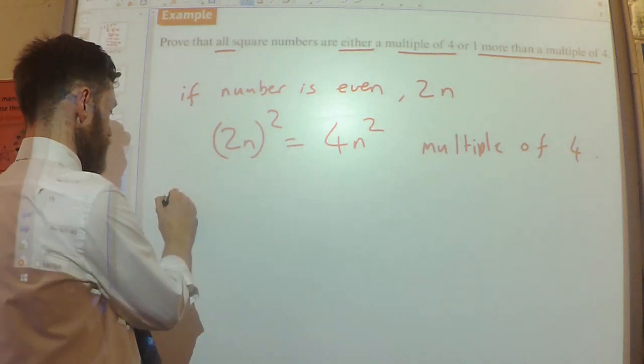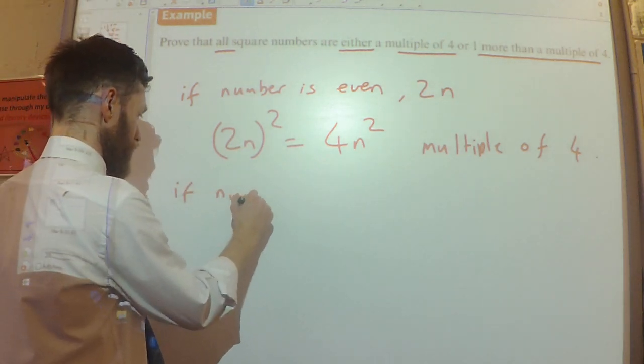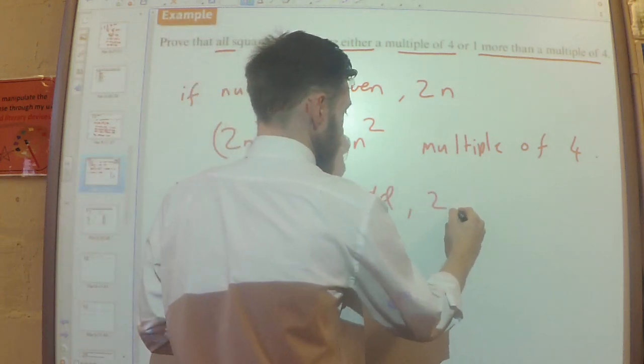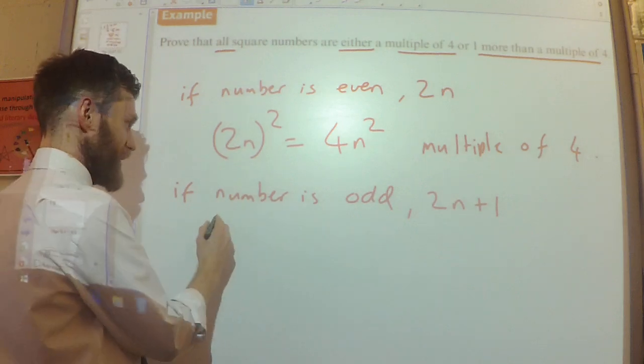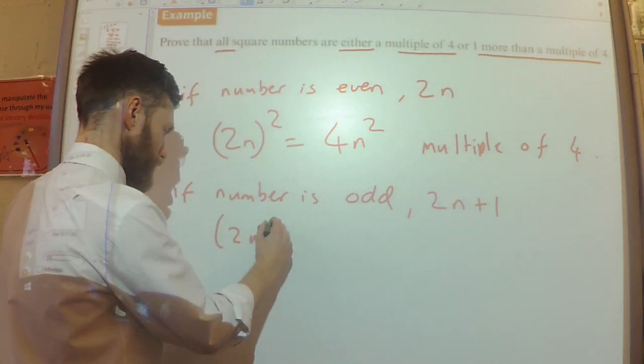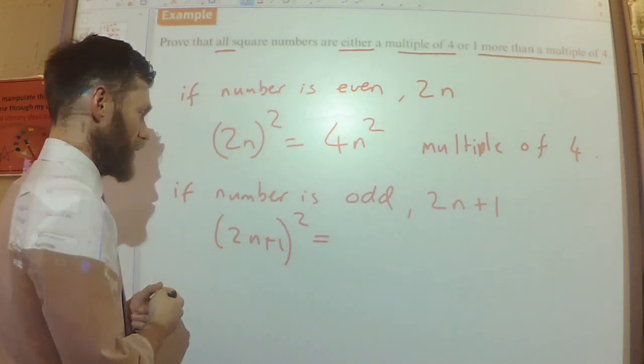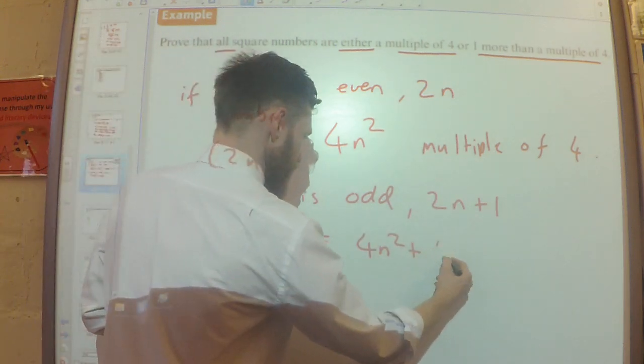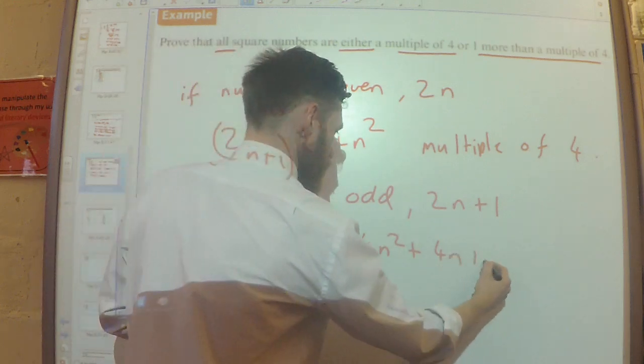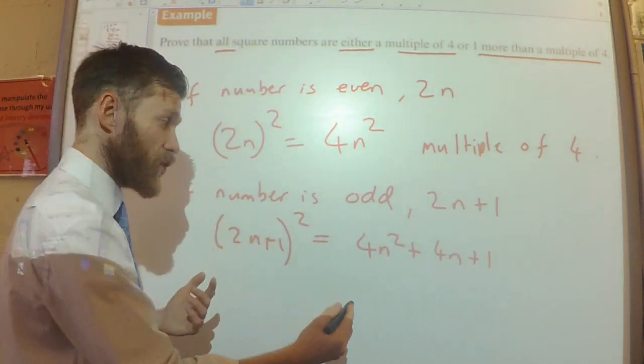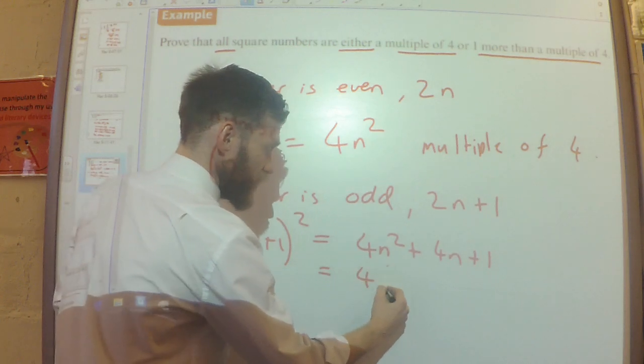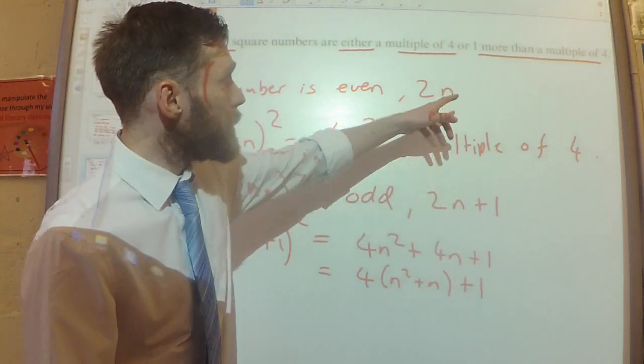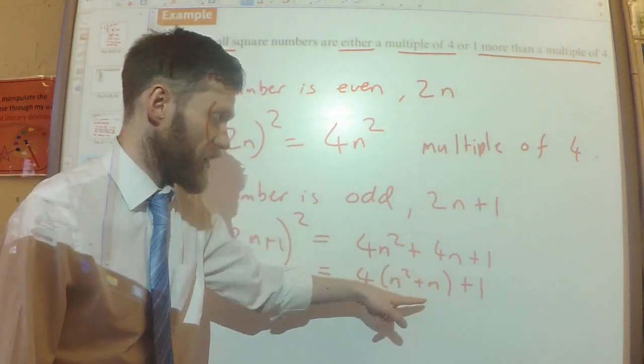Okay. What about if it's odd? If number is odd, well, then it would be 2n plus 1. If I square that, so if I square this, I'll get 4n squared plus 4n plus 1, which I could then write as 4 lots of n squared plus n plus 1. Which is one more than a multiple of four.